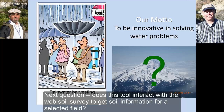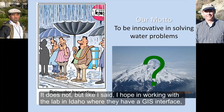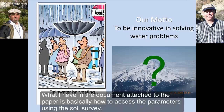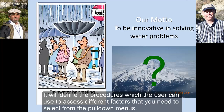Next question: does this tool interact with the web soil survey to gather soil information for a selected field? It does not, but I hope that by working with a national lab in Idaho where they have a GIS interface, we might be able to access information from the web soil survey. What I have in the document attached to the tool and in the paper is basically how to access these parameters using the web soil survey for your area, with a well-defined procedure for accessing different factors from the pull-down menus.